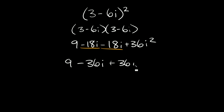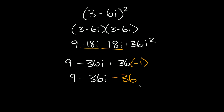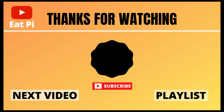And remember that i squared is equal to negative 1. So then we get 9 minus 36i minus 36. Then 9 minus 36 is equal to negative 27. So our answer is going to be negative 27 minus 36i. If you found the video helpful, definitely leave a thumbs up down below, and if you have any other questions or want to see any other examples, just let me know in the comment section below.